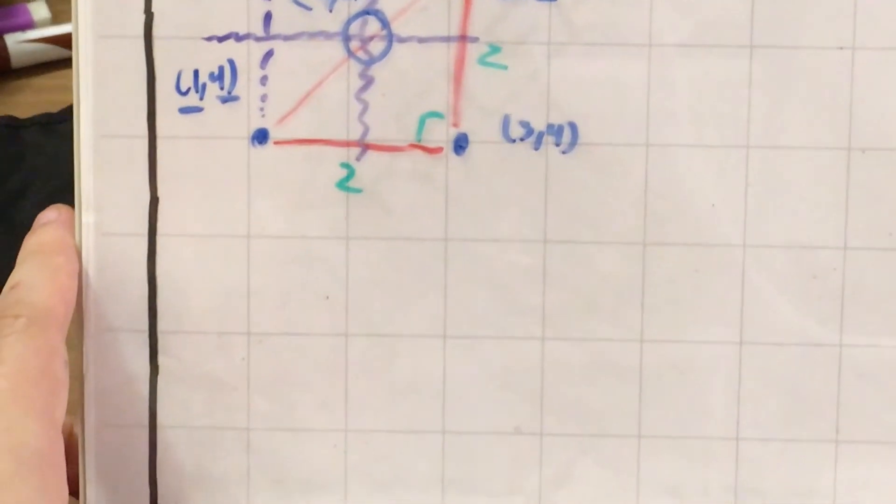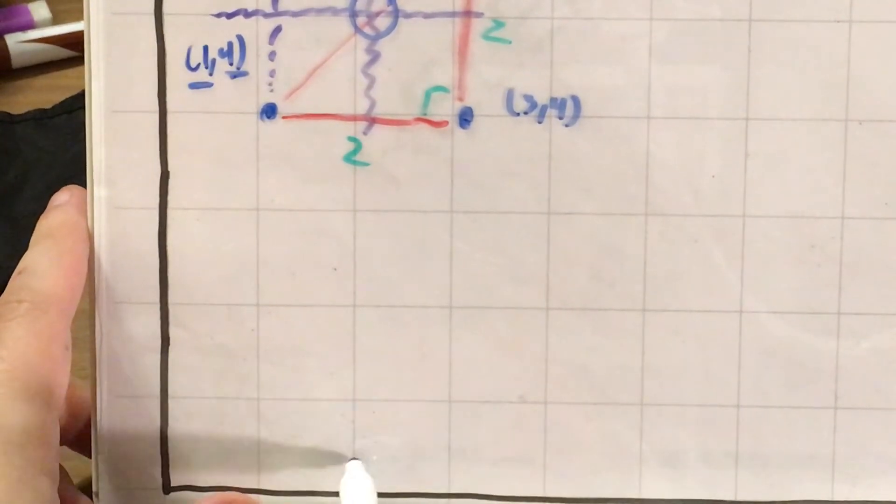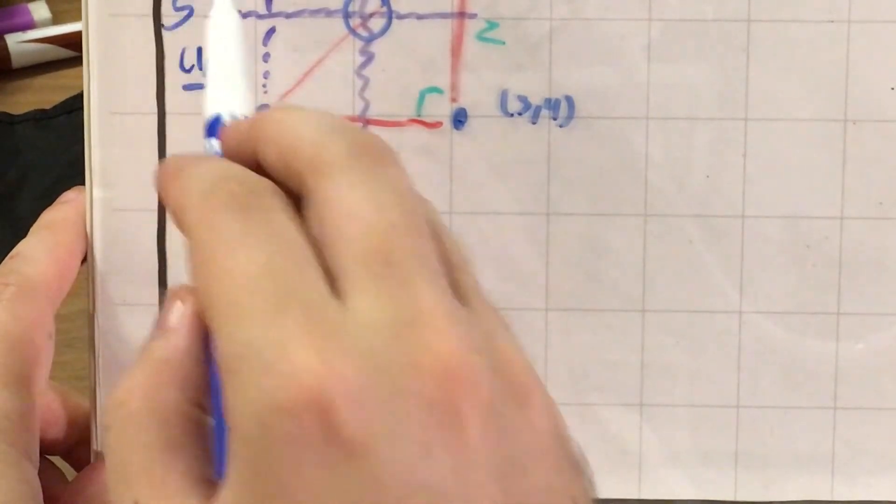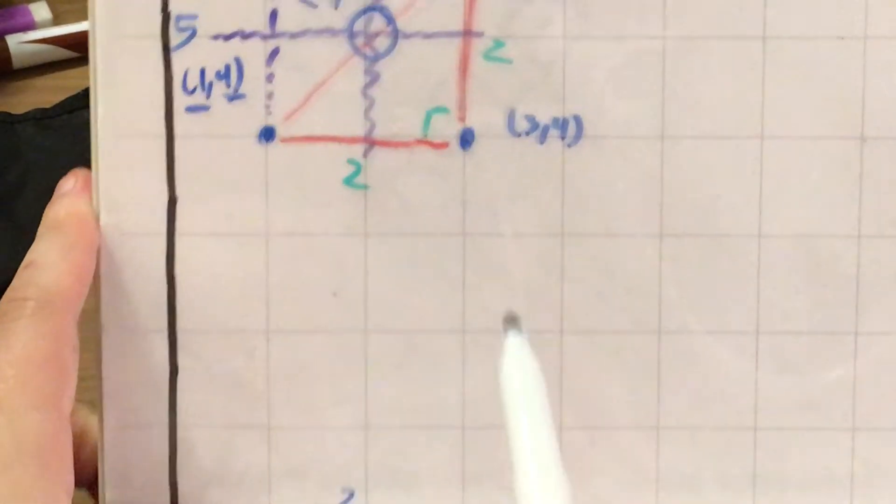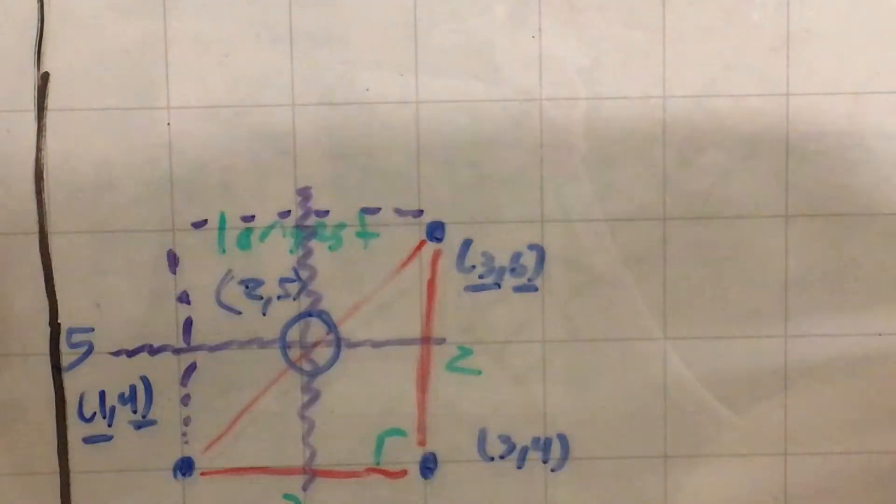And if I zoom this out now, my x is 1, 2. My y is 1, 2, 3, 4, 5. So whether by trying to find the point on the graph, or by thinking about what number comes right between 1 and 3, and what number comes right between 4 and 6, I got (2, 5) as my coordinates.